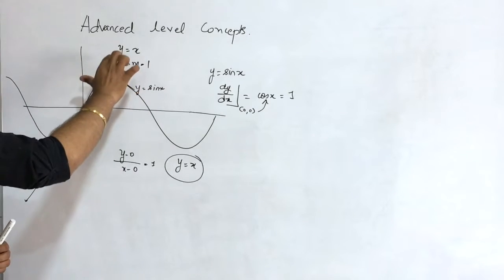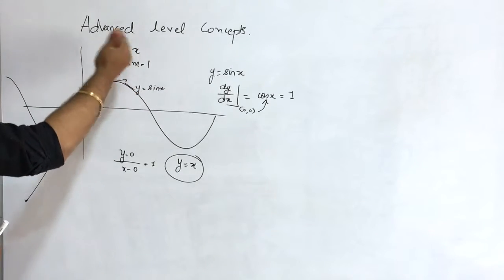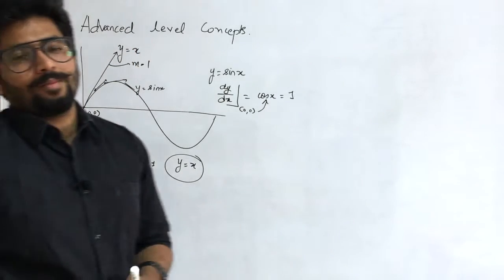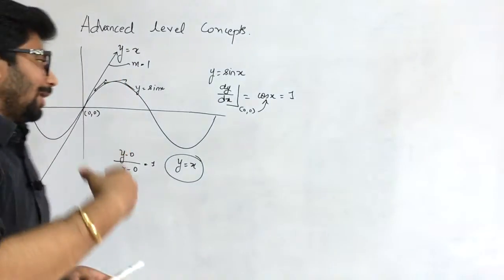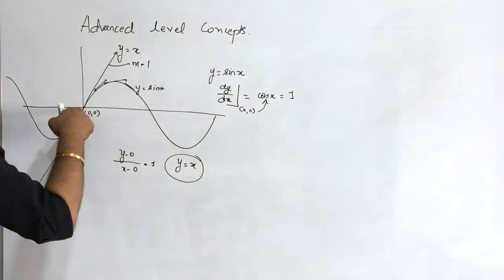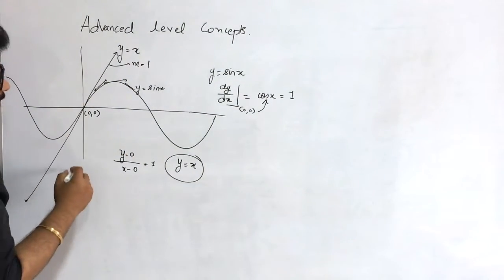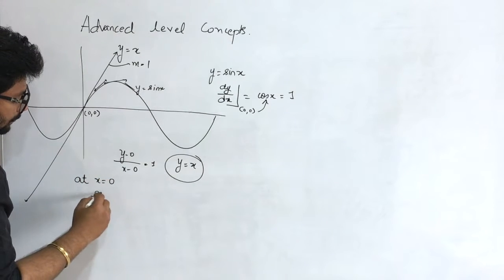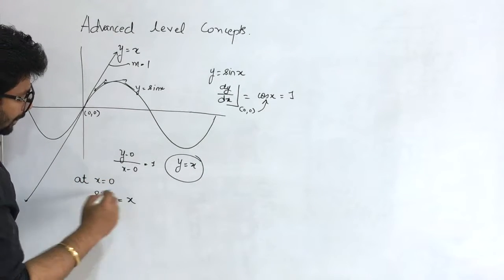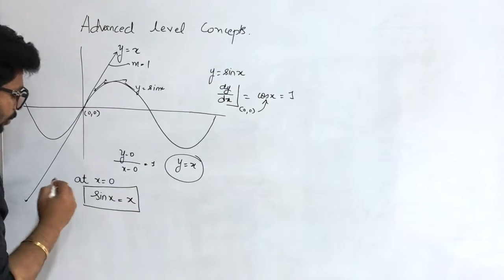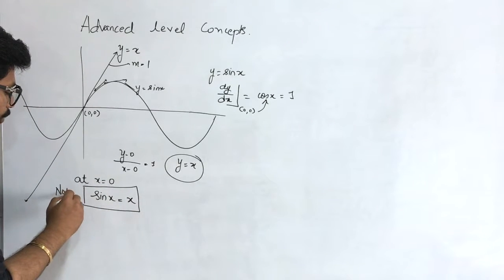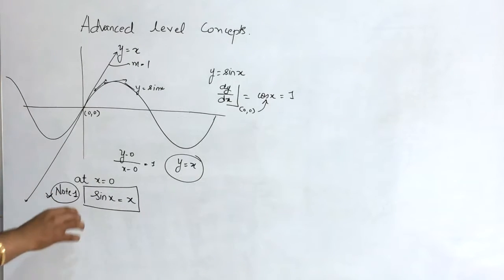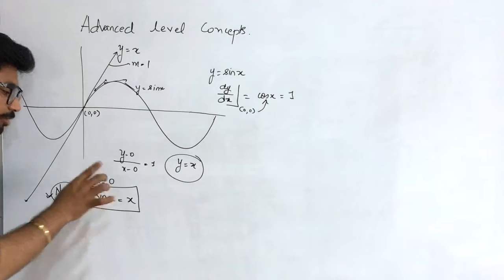So that means the graph of y = x lies above the graph of y = sin(x). When x equals 0, sin(x) and x are equal — that is your Note 1. Note 1 says: sin(x) equals x when the value of x is 0.